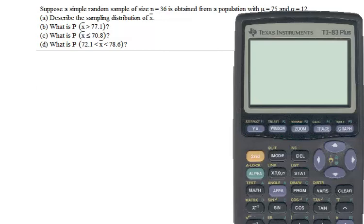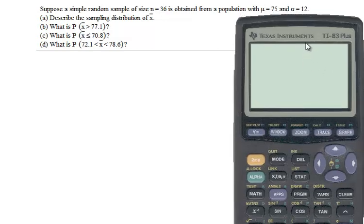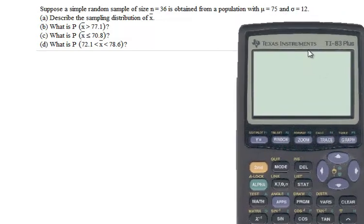Okay, let's look at this problem here. Suppose that a simple random sample of size n equals 36 is obtained from a population with a mean of 75 and a standard deviation of 12. Describe the sampling distribution of x bar.